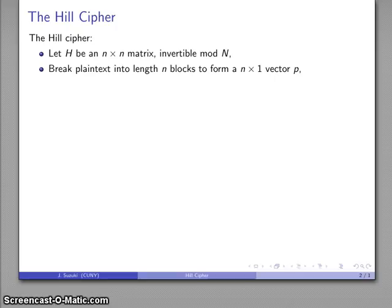And what I'm going to do next is break the plaintext into length n blocks, and each block is going to form an n by 1 vector, which we'll call P for plaintext. And as necessary, we may have to pad P to make it of the appropriate length.